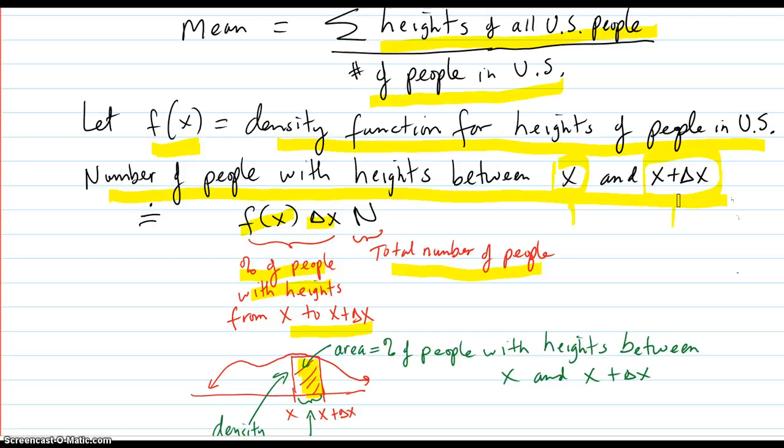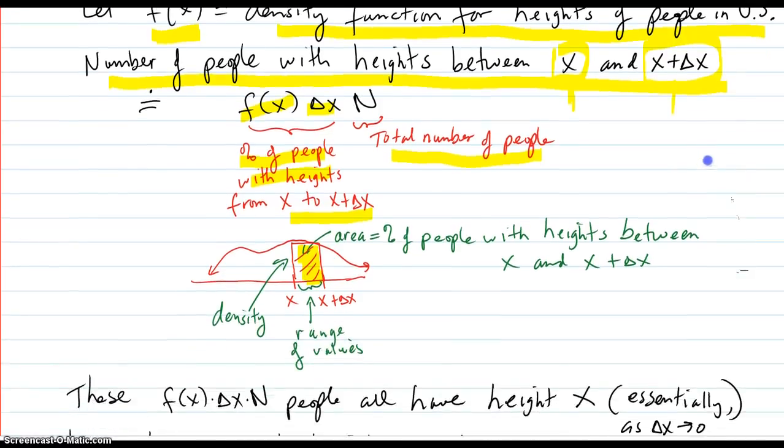you're going to get the number of people with the heights between x and x plus delta x. So if you had 100 people and 10% of them were between x and x plus delta x, then you would have 10% of 100, which is 10 people between x and x plus delta x in height. So here's a little picture for that.